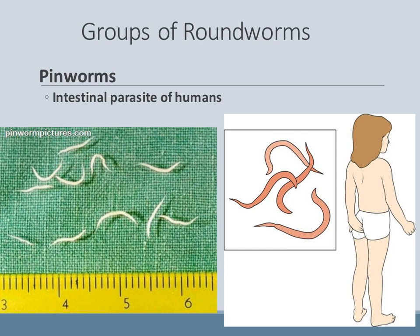There are two groups of roundworms: pinworms and hookworms, and both are intestinal parasites of humans. Pinworms are very small — less than an inch in size. They are consumed when you get dirt under your fingernails and put your hands in your mouth, and then develop inside your intestines. At night while you're sleeping, the female comes out of the anus and lays her eggs around the outside, then climbs back in. As the larvae develop, they create an itchy feeling, which is why you see kids scratching.